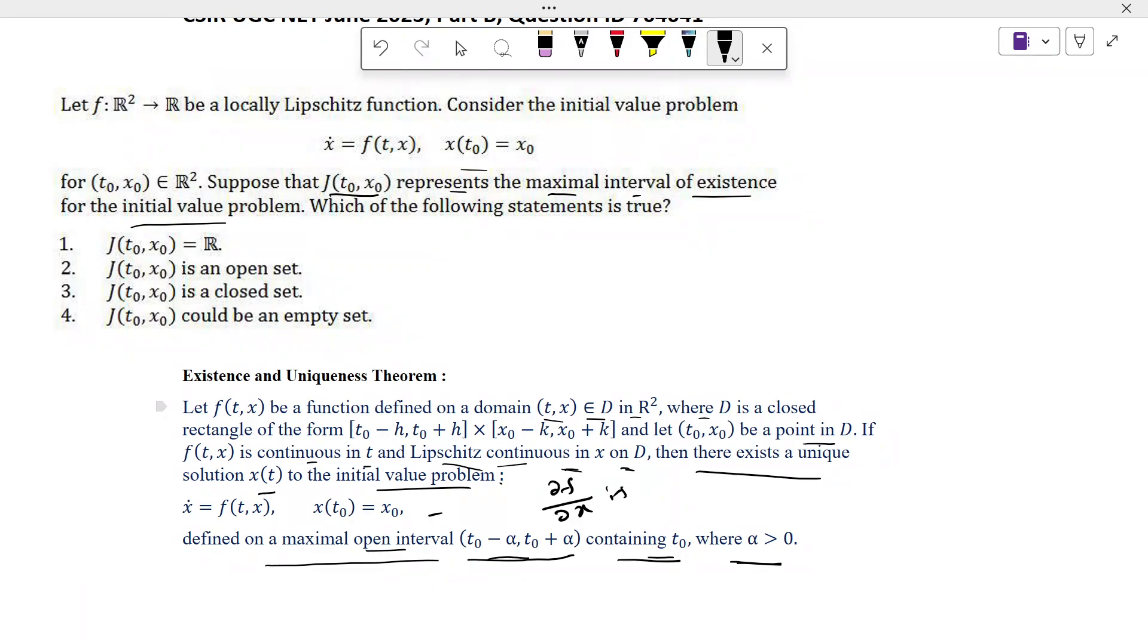Here what is said: f is a Lipschitz function, so it is also Lipschitz continuous, so f(t,x) should be continuous. So we can use the Existence and Uniqueness Theorem. By this theorem we can get an open interval (t0 minus alpha, t0 plus alpha) surrounding (t0, x0), so J should be an open set. So option 2 is true.